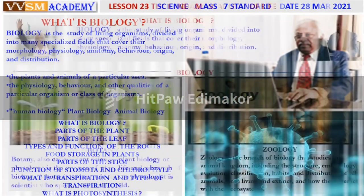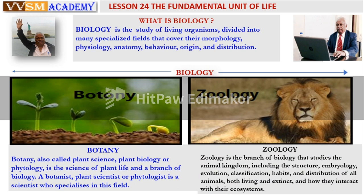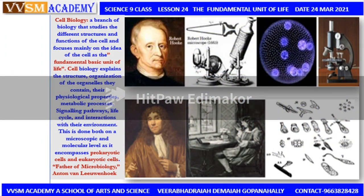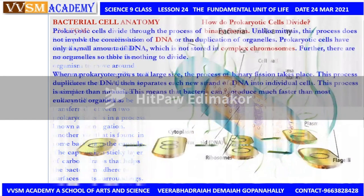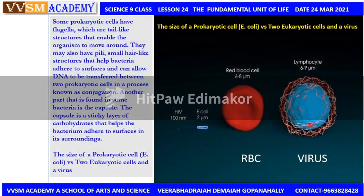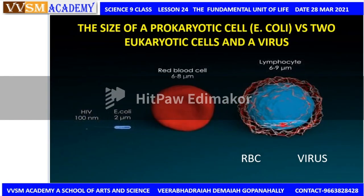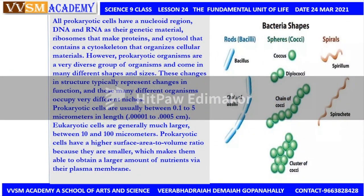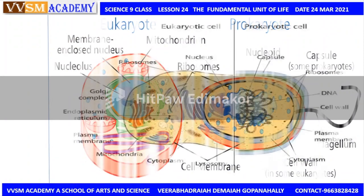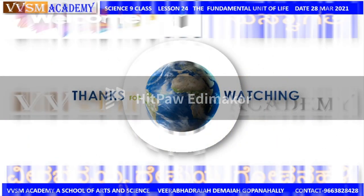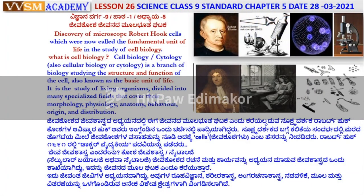Today I am telling you about biological classes — what is biology, what are the branches of biology, botany and zoology. Cell biology is a branch of biology that studies the different structures and functions of cells. We have discussed Robert Hooke and different organisms — prokaryotic and eukaryotic cells — in our previous classes, including the size of prokaryotic cells, bacteria shapes, and related things. Today's topic is the discovery of the microscope.